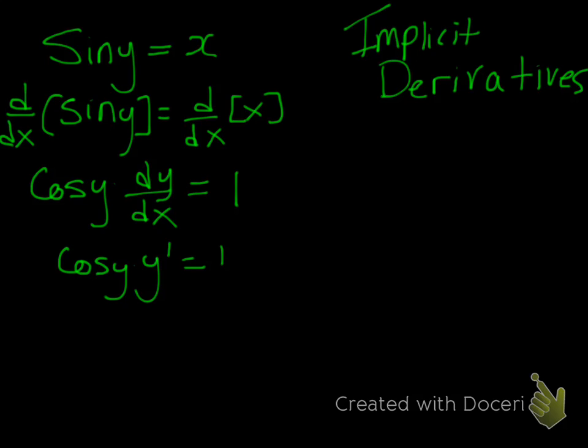And then we want to write things in terms of y prime. So we divide both sides by cos y. So we end up with y prime is equal to 1 over cos y.